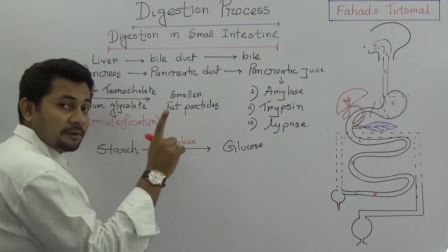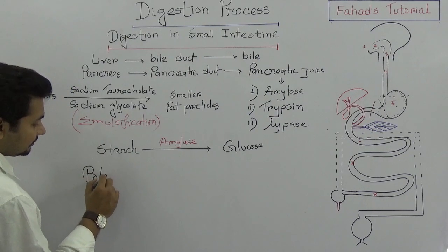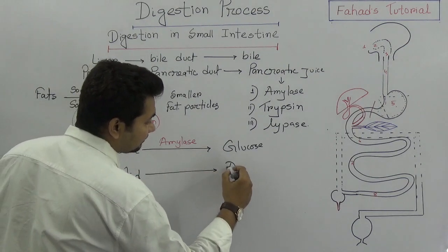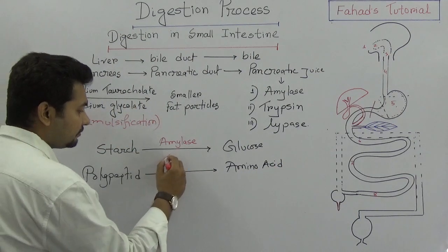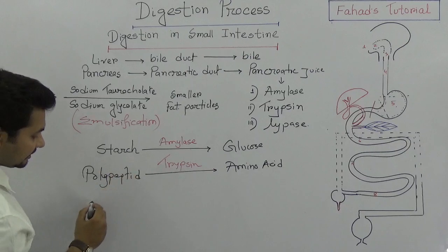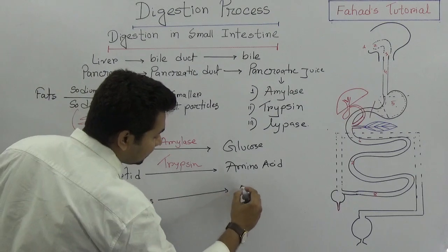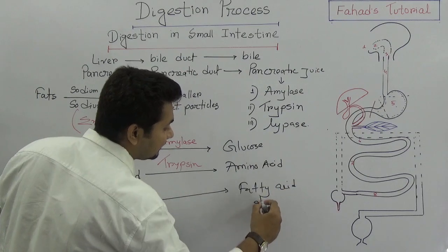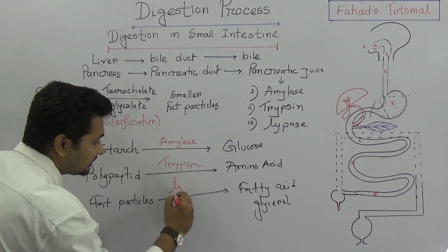Amylase turns starch into glucose. The polypeptide will turn into amino acids — which is very important for our body — with the activity of trypsin. These smaller fat particles are then turned into fatty acids and glycerol with the activity of lipase.